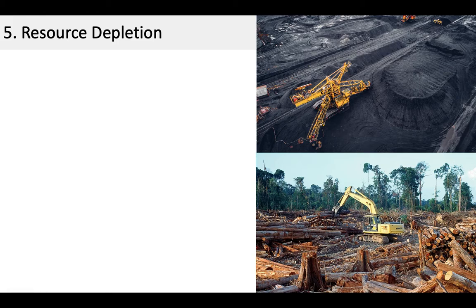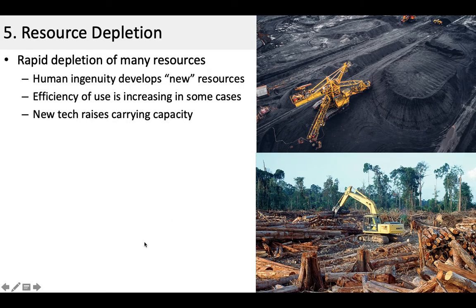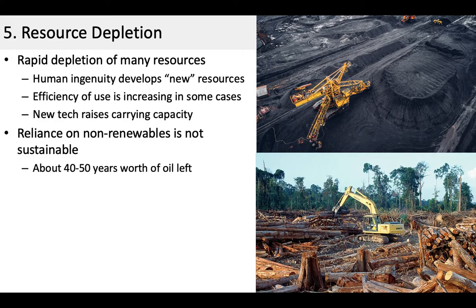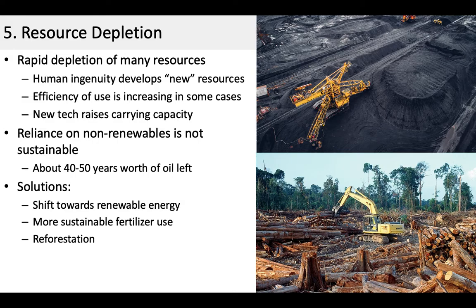The last indicator for sustainability is resource depletion. Whether it's coal or forests, there are a lot of resources being rapidly depleted. Thankfully, as we increase our technology, we can use them in new ways, we're more efficient at using them, and we're raising the carrying capacity of the earth. We can't rely on non-renewables like coal and oil indefinitely — we only have about 40 to 50 years of oil left if we continue using it at this rate. So we need to shift towards renewable energy, decrease our dependence on fertilizer, and start reforesting areas.